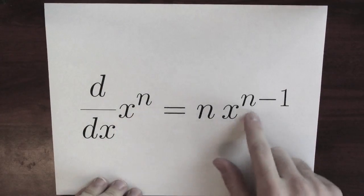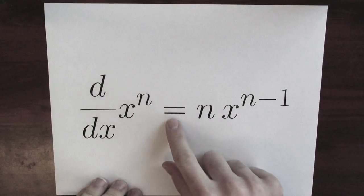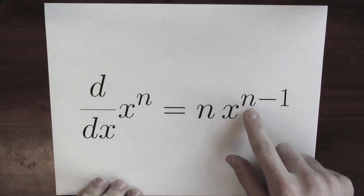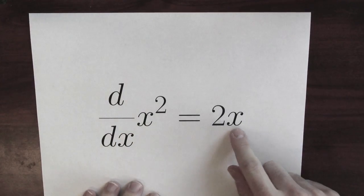When n equals 2, that means we're differentiating x squared, which we studied a little bit ago. Now, here's the power rule. If I plug in 2 for n, I've got the derivative of x squared is 2 times x to the 2 minus 1. Or, a bit more nicely written, the derivative of x squared is 2x.